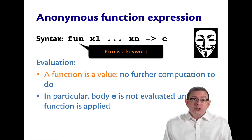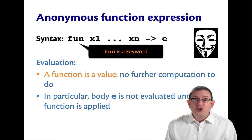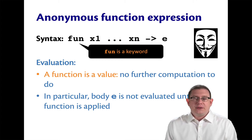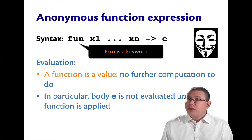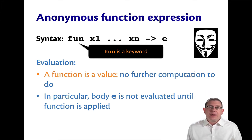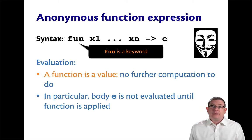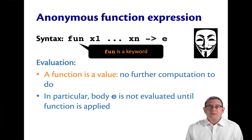How do we evaluate functions? Nothing to do. Think of an anonymous function just like an integer or a string or a boolean — all of those are already values, there's no computation to be done with them. It's the same thing for an anonymous function. A common mistake people make is thinking that the body of the function would be evaluated then. The OCaml rules of evaluation say that the body of the function is not evaluated until the time that the function is applied. The anonymous function is already a value.